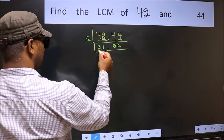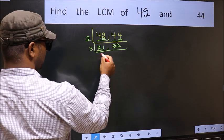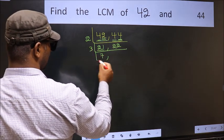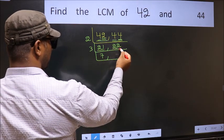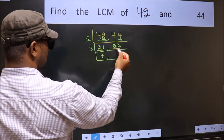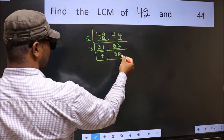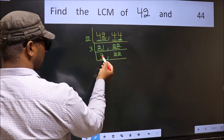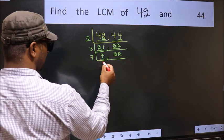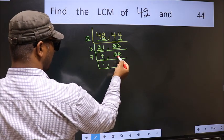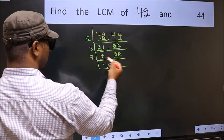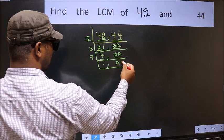Now here we have 21. 21 is 3 times 7 equals 21. The other number 22 not divisible by 3 so we write it down as it is. Here we have 7. 7 is a prime number so 7 times 1 is 7. The other number 22 not divisible by 7 so we write it down as it is.